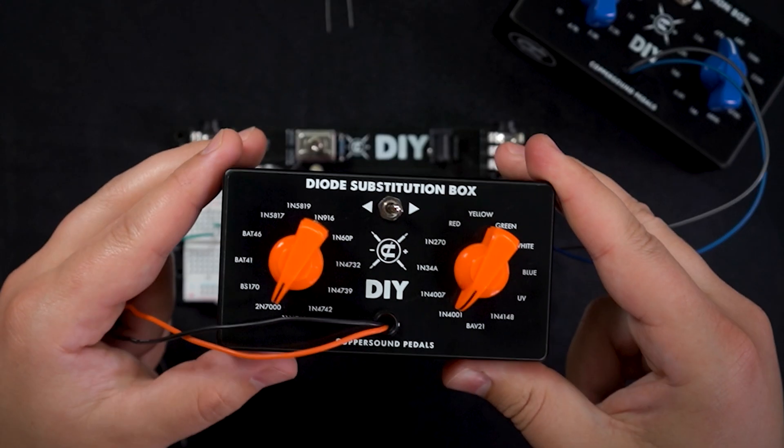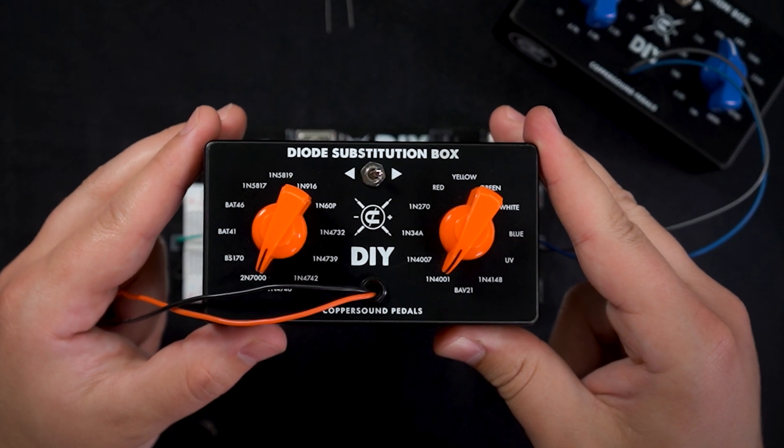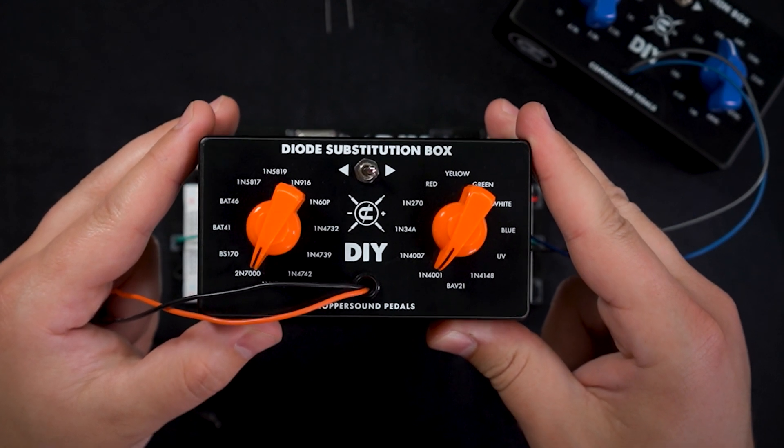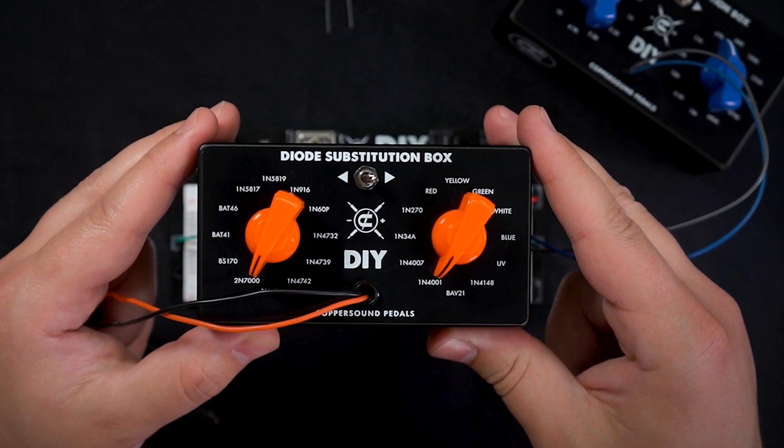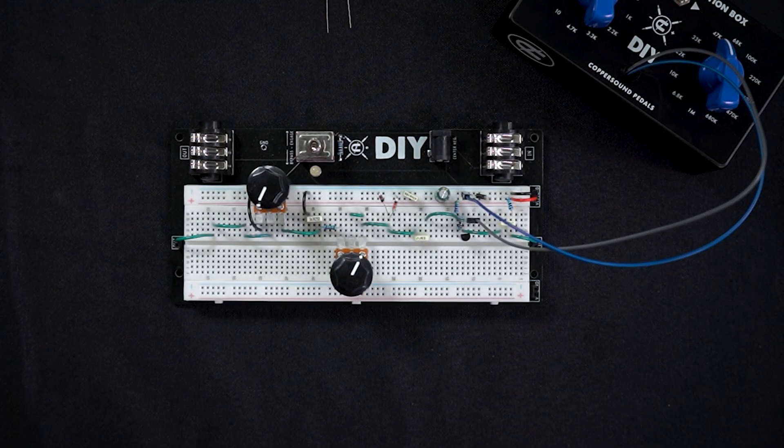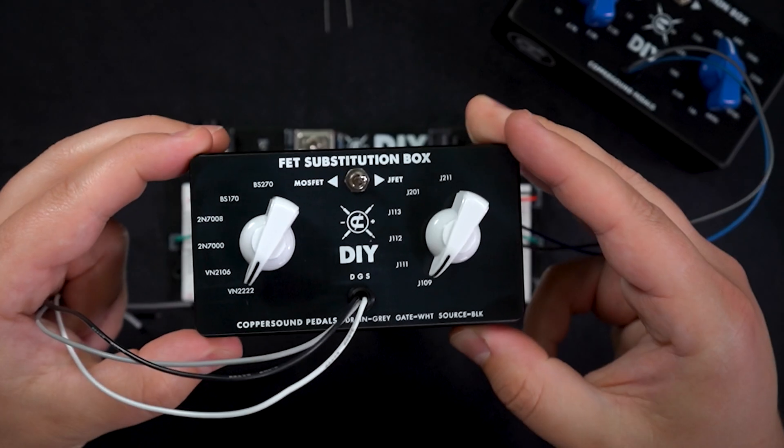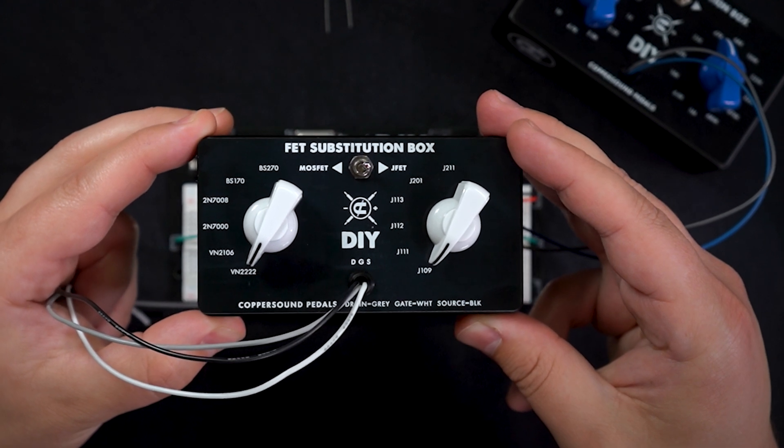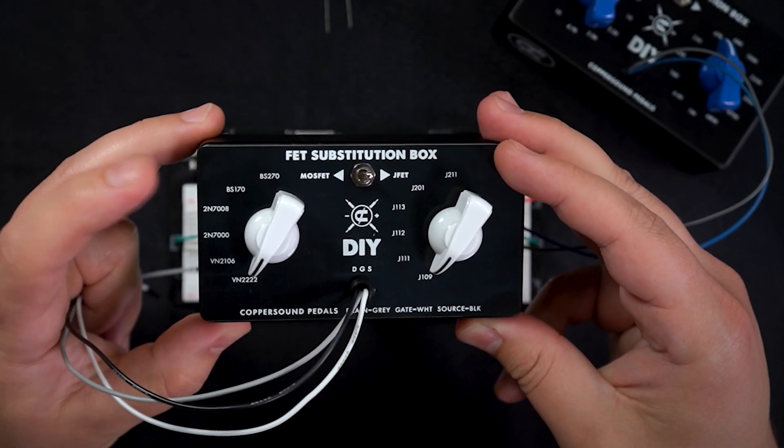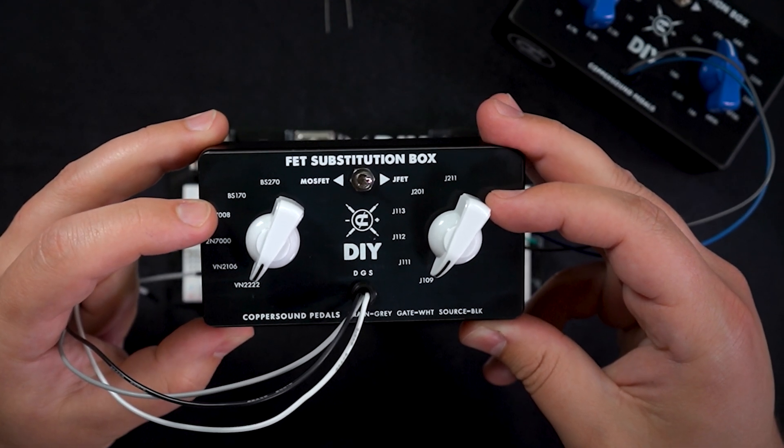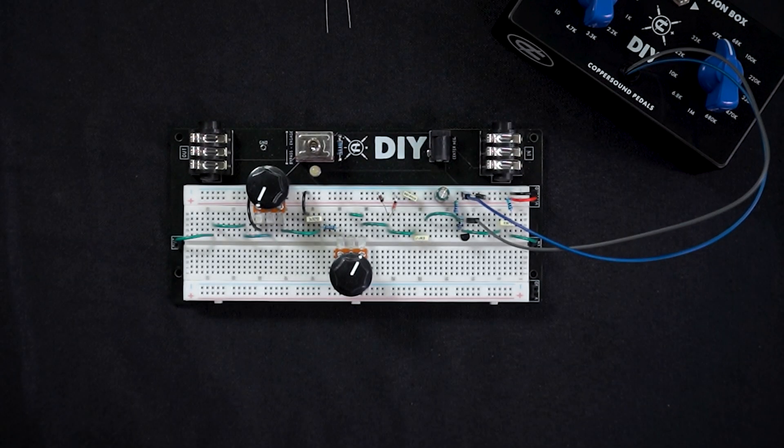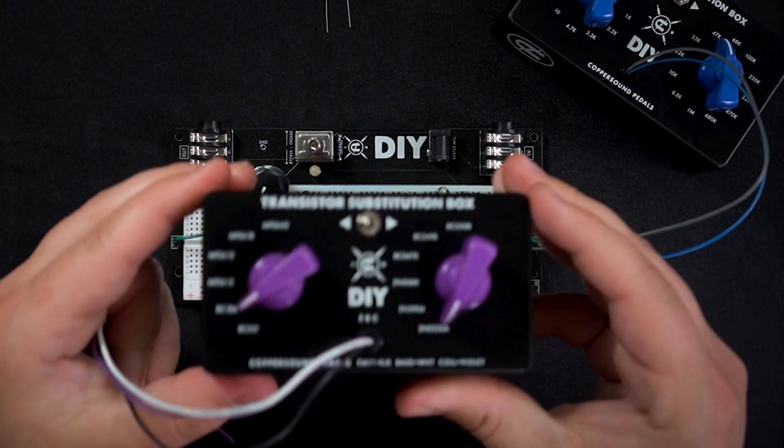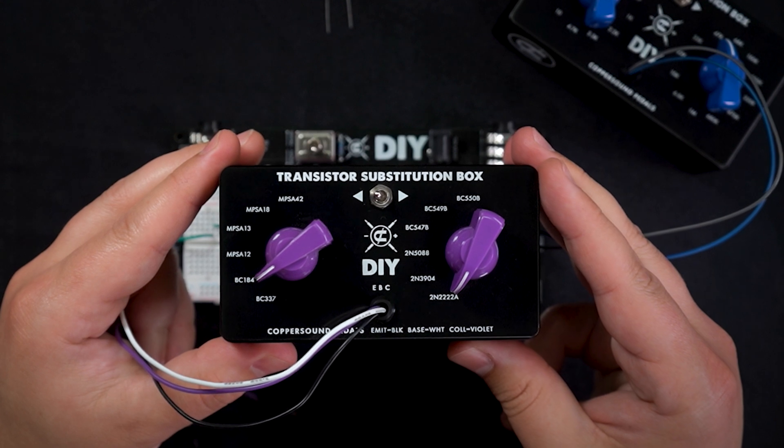We've also got diodes which are two symmetrical pairs on each side. We've got FET substitution box which we have JFETs and MOSFETs and we've got BJT style transistors.